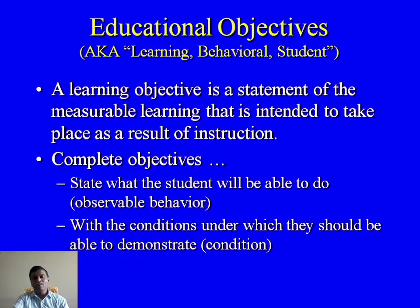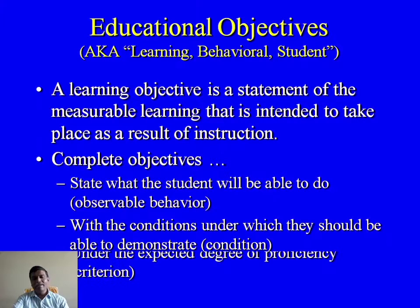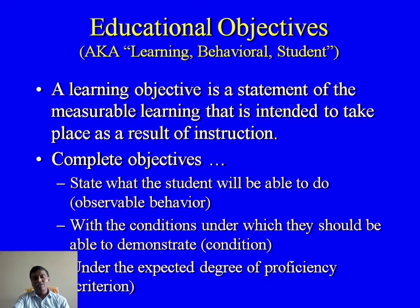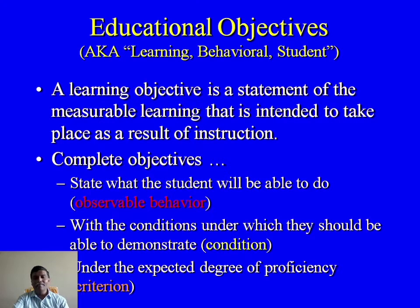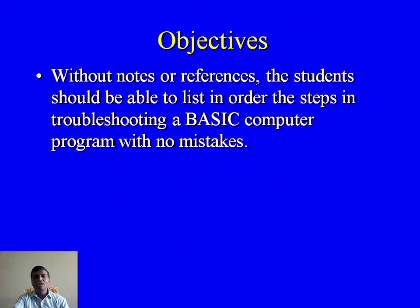The second component is the condition — with the conditions under which they should be able to demonstrate the behavior. The third component is the criterion — the expected degree of proficiency. So to complete objectives, keep in mind: observable behavior, condition, and criterion.